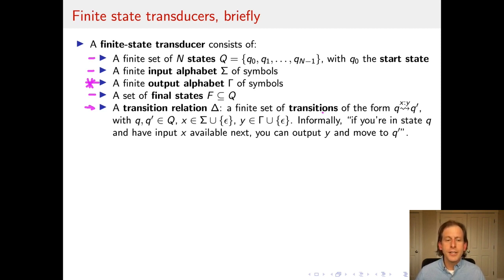So each transition in a finite state transducer has the form, as you see here: Q is the from state, Q' is the to state, X the input symbol is either something in sigma or the empty string ε, and Y the output symbol is something from gamma or the empty string ε. The informal gloss of this kind of transition is that if you're in state Q and have input X available next, you can output Y and move to state Q'.